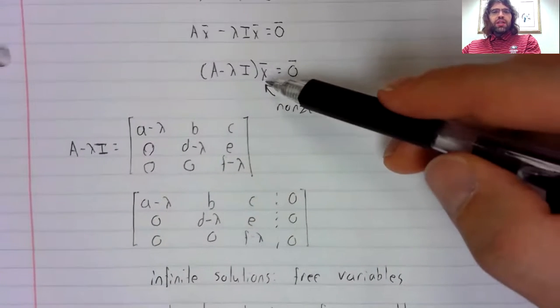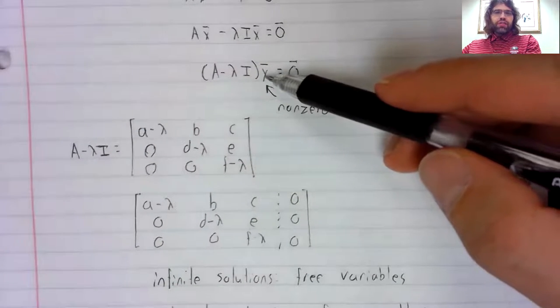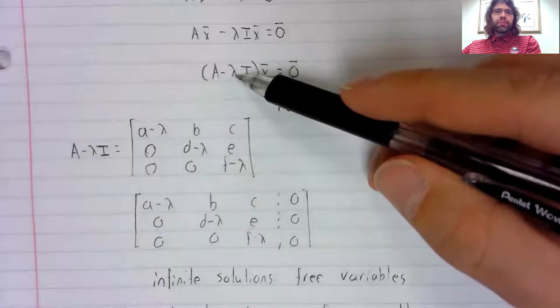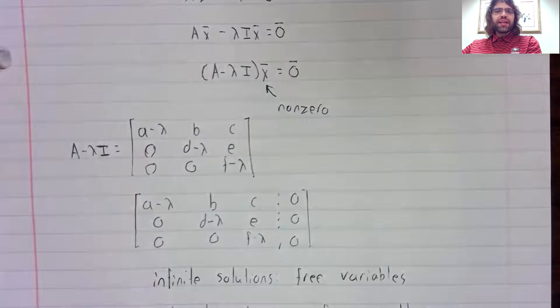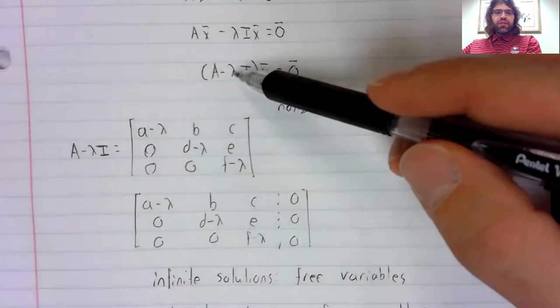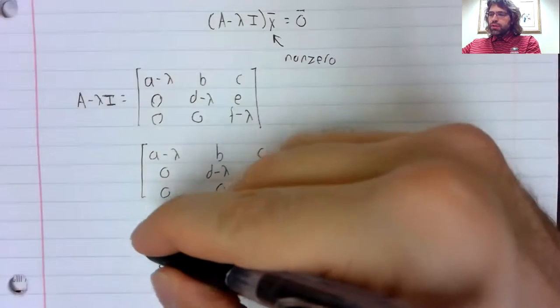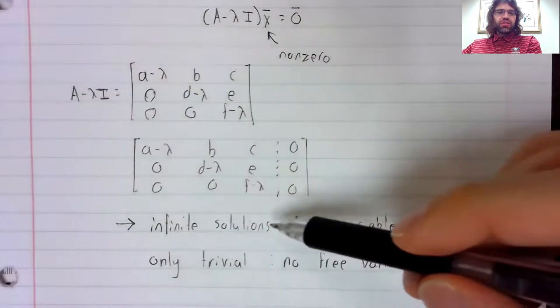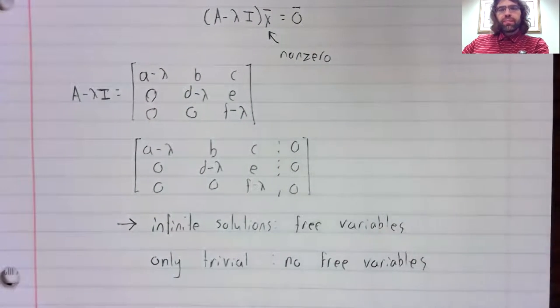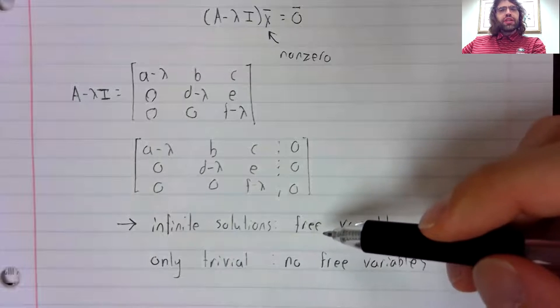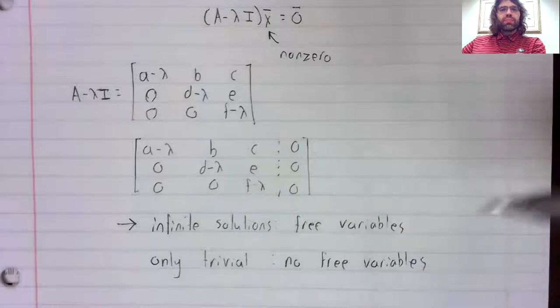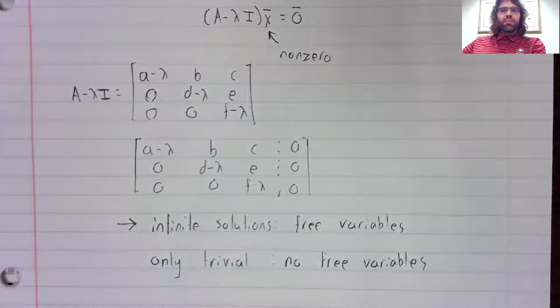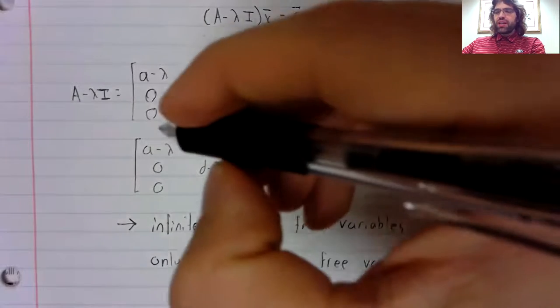And we need a non-trivial solution for lambda to be an eigenvalue. So lambda is an eigenvalue if we're in this situation. We have three variables if one of our columns is not a pivot column.